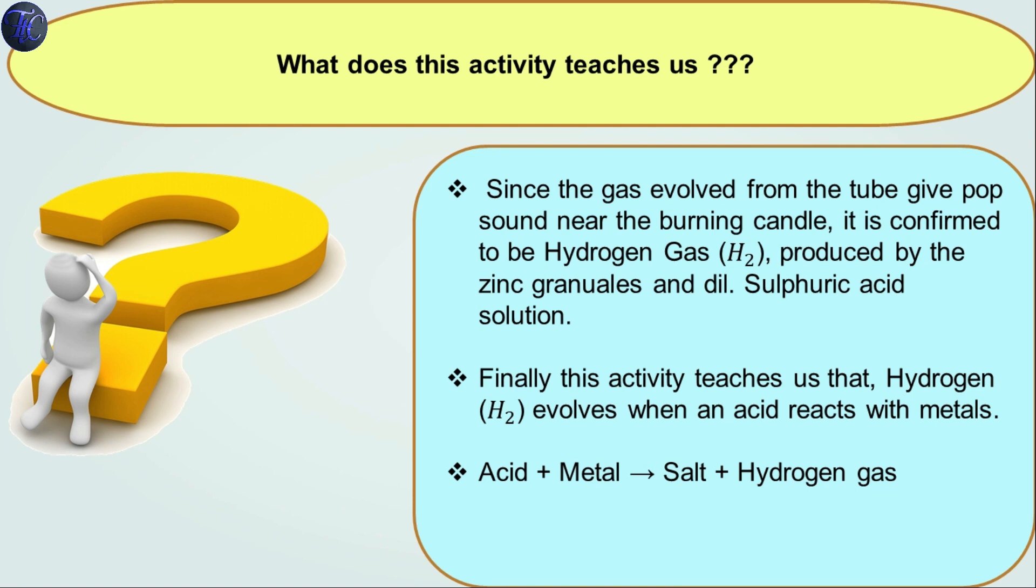The reaction of this activity can be written as: acid, which we had taken as dilute sulfuric acid, plus a metal, which we had taken as zinc, will form a salt, that is zinc sulfate ZnSO4, and hydrogen gas H2 is evolved. So acid plus metal gives salt and hydrogen gas. You should note down this.